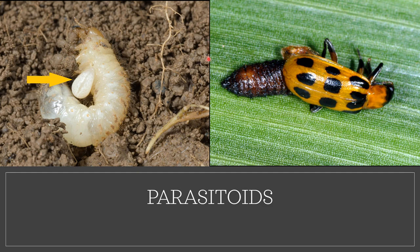We also have here another type of parasitoid — the parasitoid pupa that emerges from a spotted cucumber beetle. It will eventually kill its host, the spotted cucumber beetle, having developed within this host.